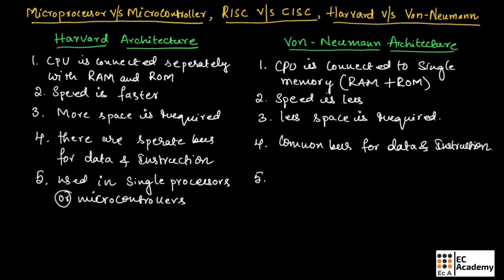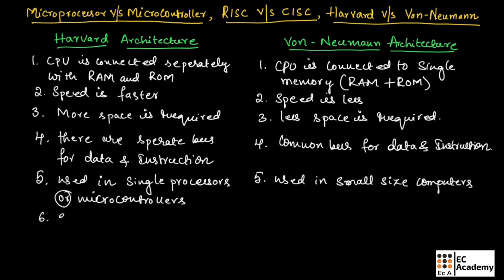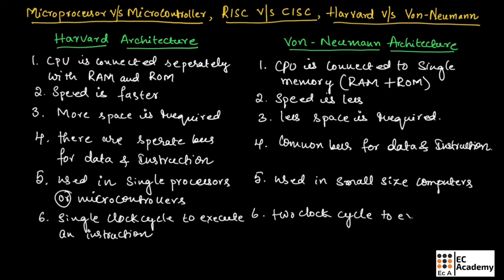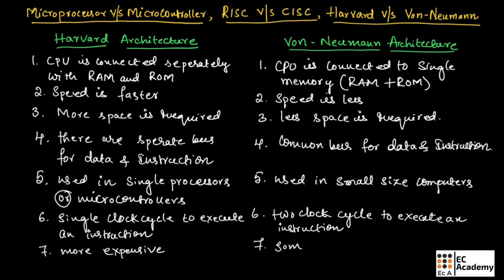Von Neumann architecture is used in small-size computers. In Von Neumann architecture there is a common bus to fetch data and instructions. In Harvard architecture, a single clock cycle is required to execute an instruction, while in Von Neumann architecture, 2 clock cycles are needed to execute an instruction. Harvard architecture is more expensive, whereas Von Neumann architecture is somewhat cheaper compared to Harvard architecture.